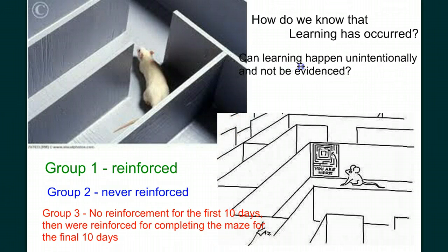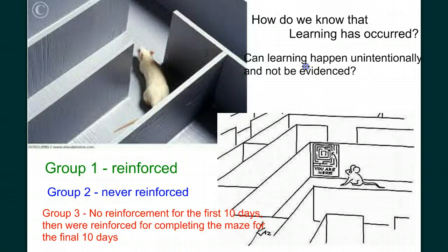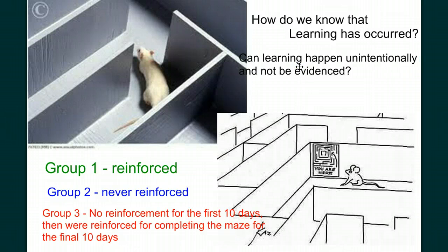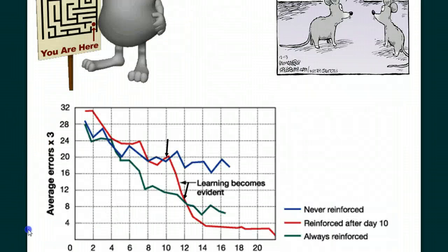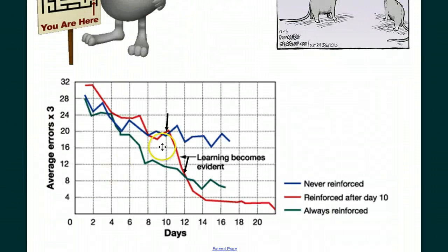There had been no motivation for the rats to show that they knew the maze. When that reinforcement was presented, they quickly showed that they had been learning by their very fast increase in performance.